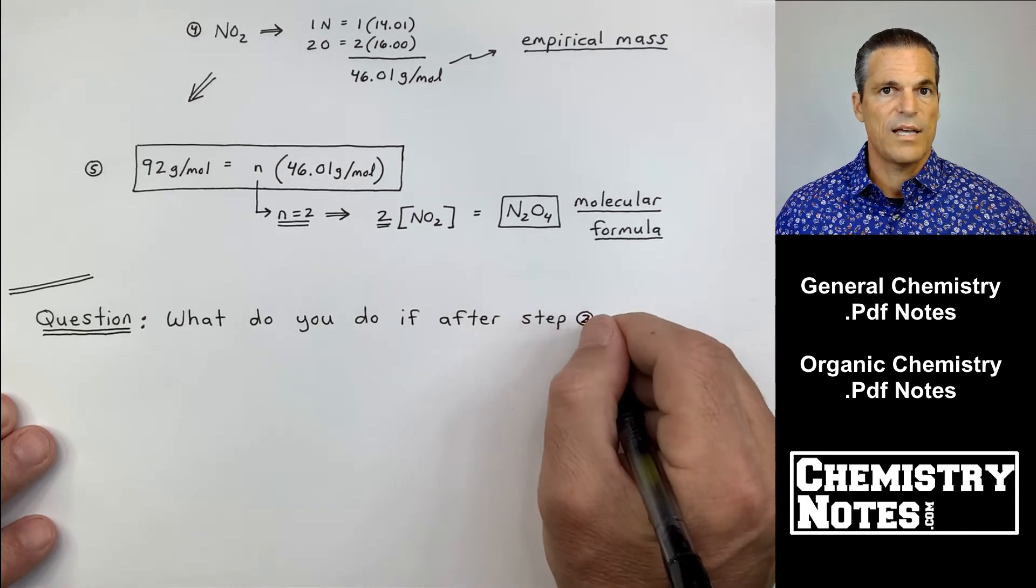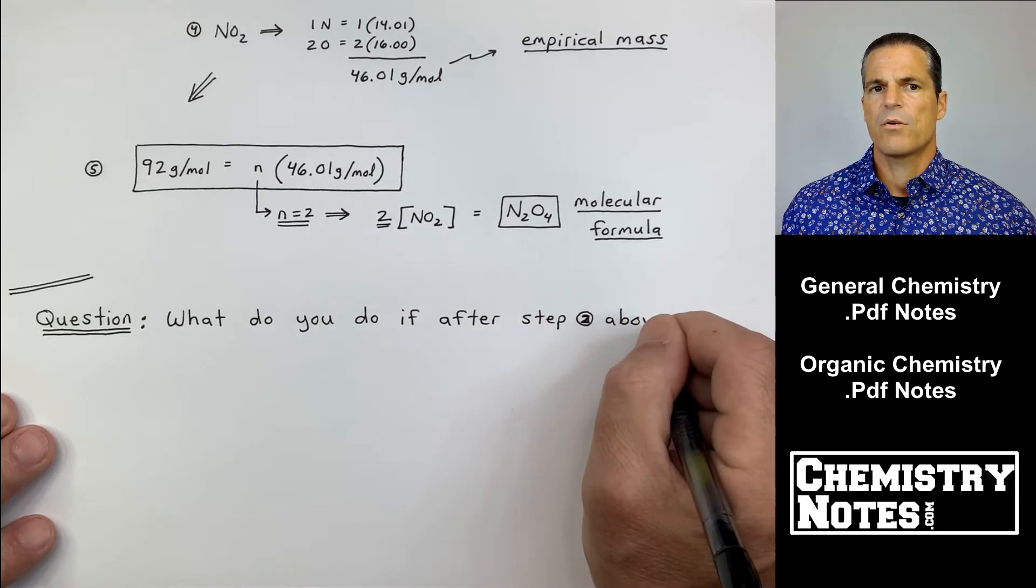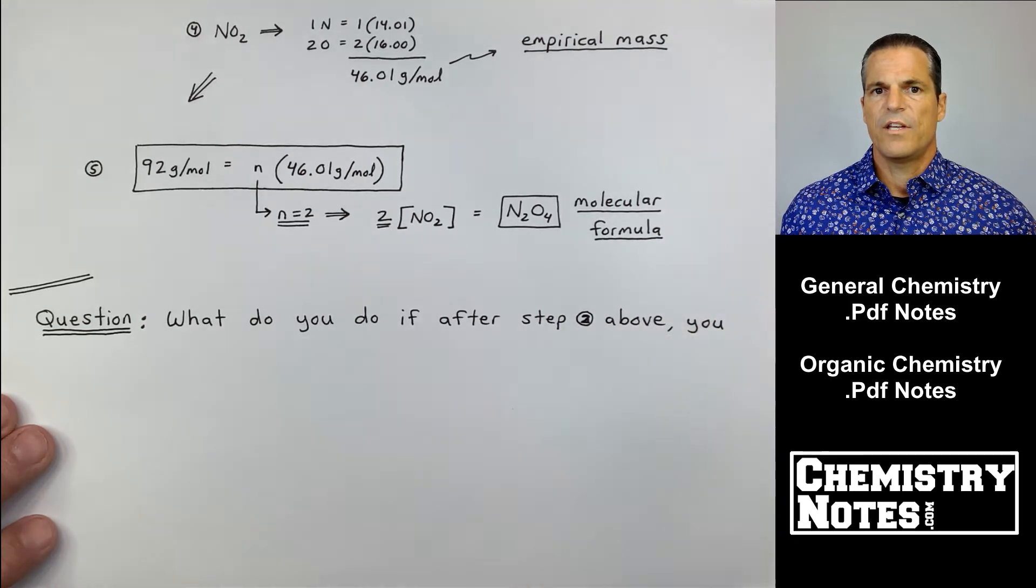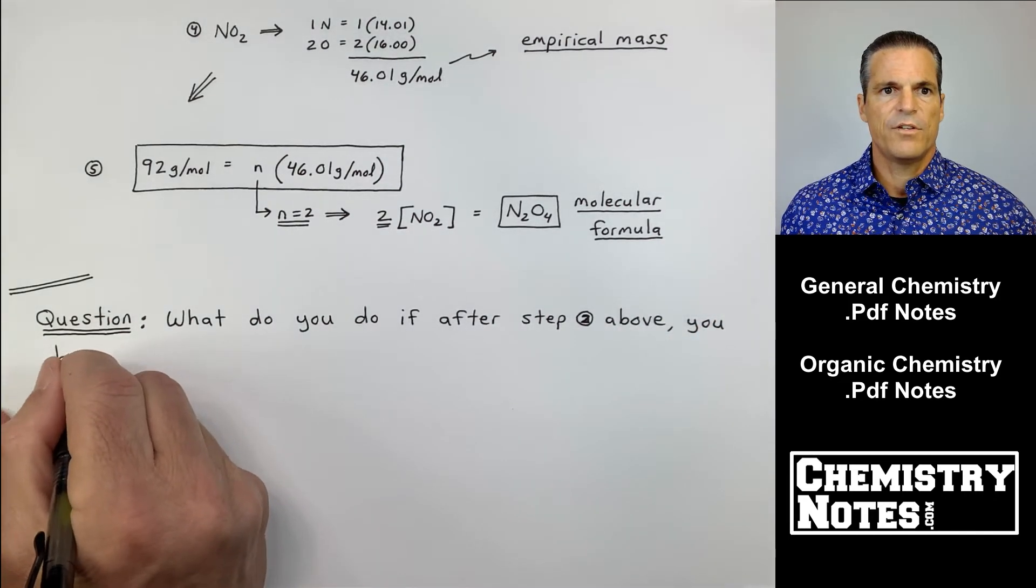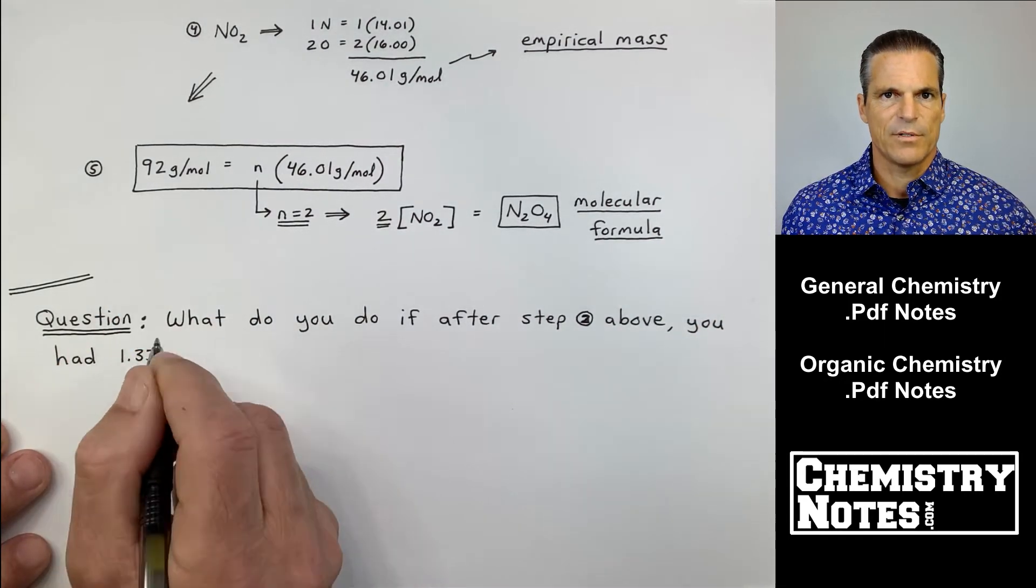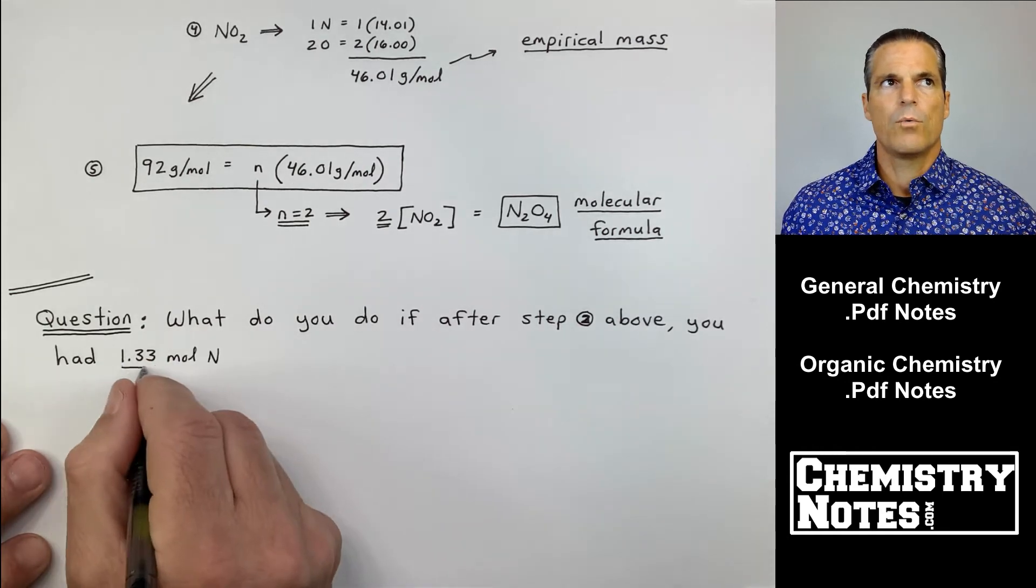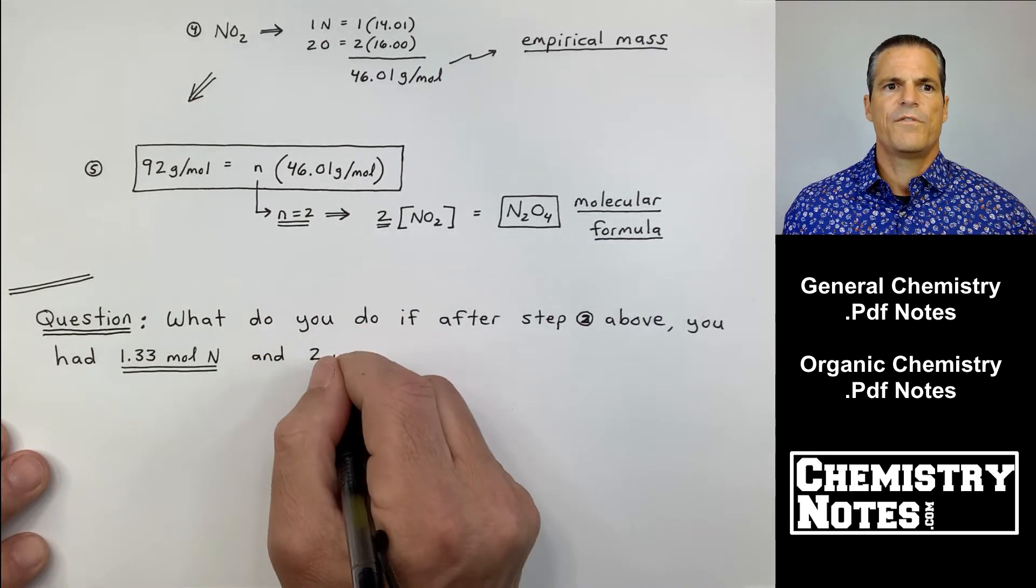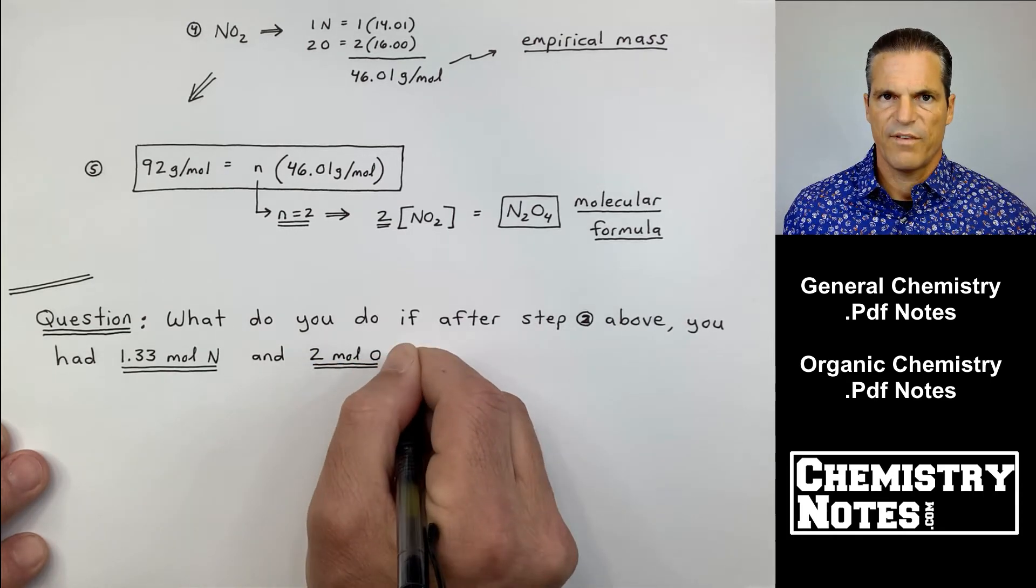Now I have a question, because the two examples we did worked out really nicely. Here's my question: what do you do if after step two above you don't get these nice clean numbers? You don't get one mole of N, two moles of O. What if you got 1.33 moles of N and two moles of O?